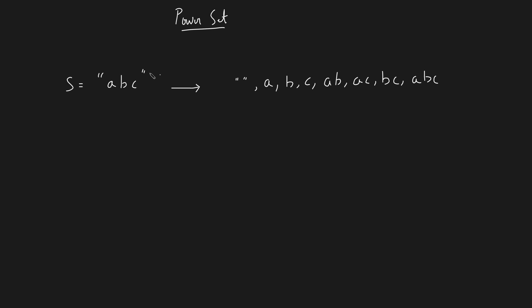So what is a PowerSet? If you consider the string ABC and try to generate all possible subsequences of it, you will have: an empty substring, then A, then B, then C, then AB, then AC, then BC, and then ABC. You need to generate all possible strings you can get from the given string. If the length of any string is 3, the number of substrings that can be generated is 2 to the power N, that is 2 to the power 3, or 8 substrings.